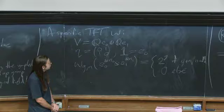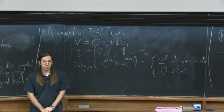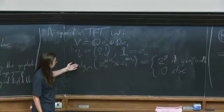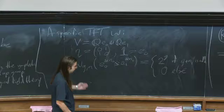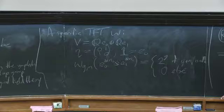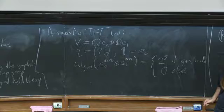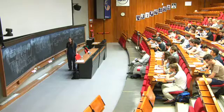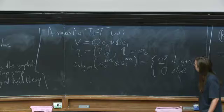To check this is a cohomological field theory, I need to verify the three axioms. It's symmetric by definition — I just care about how many e_0's and e_1's I have. Pulling back by forgetful maps is the same as adding an extra copy of e_0 as an input, and adding e_0's doesn't affect the value — e_0 is the unit. Pulling back by gluing maps: I insert the bivector given by the inverse metric, which with the anti-diagonal metric means I either put (e_0, e_1) or (e_1, e_0) on the two sides, and sum those two contributions. Since g_1 + g_2 = g, exactly one of the two choices satisfies the parity constraint.